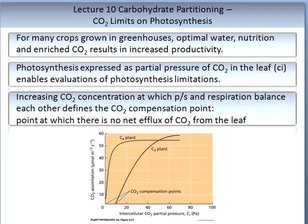For many crops grown in controlled environments such as glasshouses or greenhouses, optimal water, nutrition, and enriched CO2 can result in increased productivity. Photosynthesis can be expressed as the partial pressure of carbon dioxide in the leaf, referred to as CI. This enables evaluation of photosynthetic limitations. Increasing carbon dioxide concentration, at which photosynthesis and respiration balance each other, defines the carbon dioxide compensation point — that is, the point at which there is no net flux of carbon dioxide from the leaf.